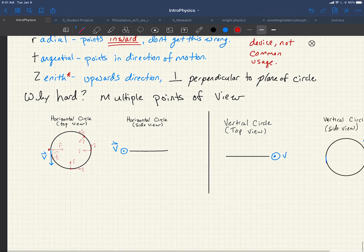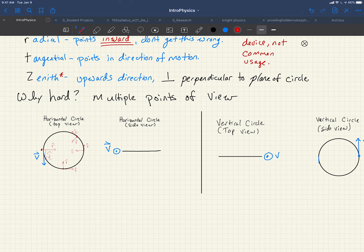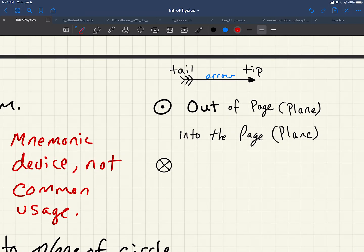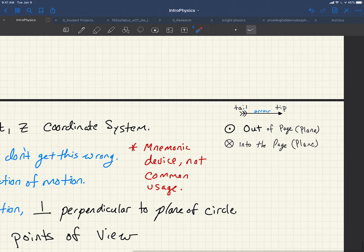So how do we denote what is into or out of the page in a way that we all understand? Well, we use what we call this arrow convention. And the arrow convention works as thus. We think of an arrow flying through the air, we've got a tip which would be coming at us, we would see a point, or the tail feathers going away from us, which we would think of as an x. So when we see just a dot coming out of the page, we think of that as out of the page. When we see an x, we think of something going into the page. So that's how we're going to denote the direction of our z-coordinates as well.